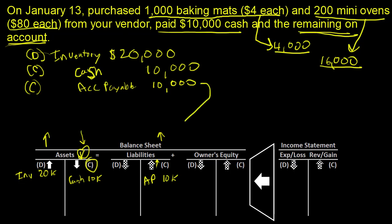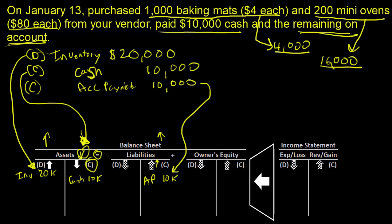Each one of these journal entries maps onto this T-account balance sheet right here. Inventory increases our assets by $20,000, cash is credited by $10,000, and accounts payable goes up $10,000. Everything is in balance — assets increased by $20,000, went down by $10,000, and liabilities went up $10,000. Net-net, assets went up $10,000 and liabilities went up $10,000, so everything is equal. That is the purchase of inventory on cash and accounts payable.